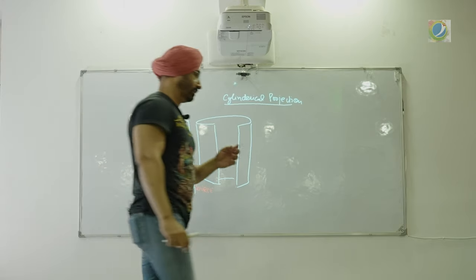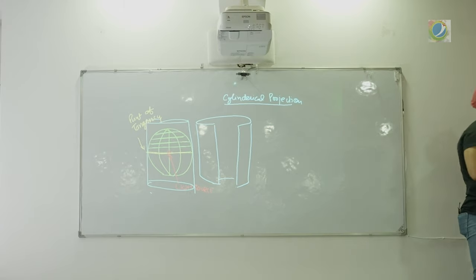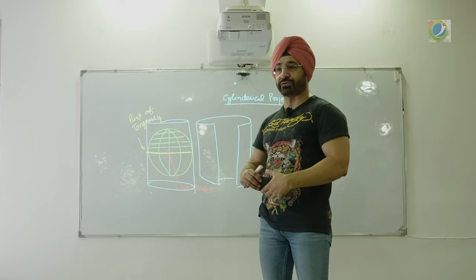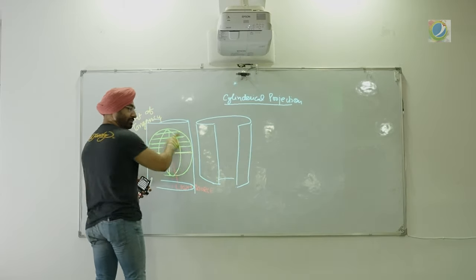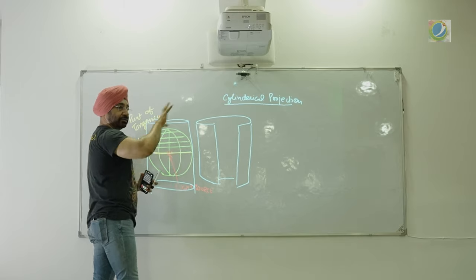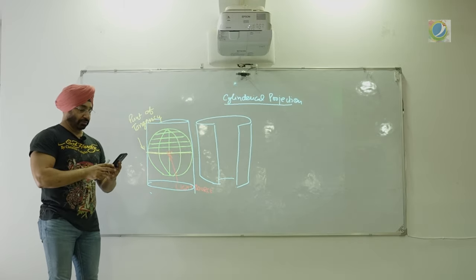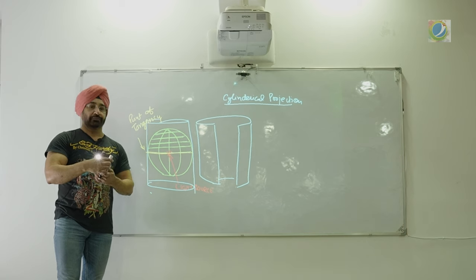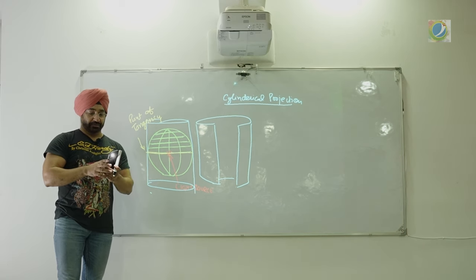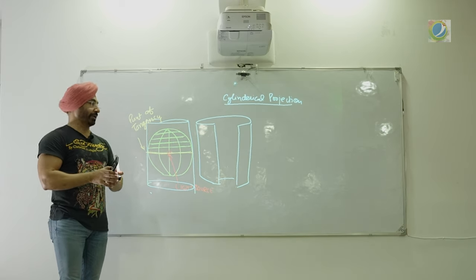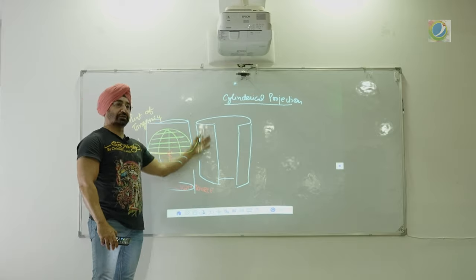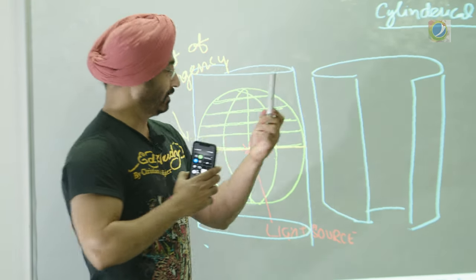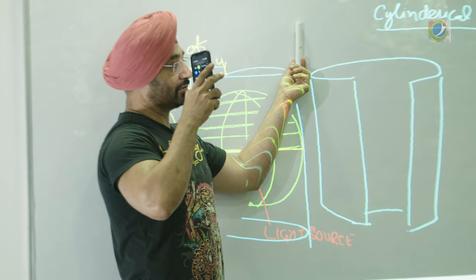In the sense — let us say I want to create a projection. You need a light source, you need a sheet, and you need the object which you need to project. In this, what I am trying to do is project this area — 10 degree, 20 degree, 30 degree. Let us say this is the pen as the object, this is the sheet, and here is the light source.